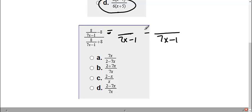Okay, and this first one already had the 7x minus 1, so I'm going to leave it. I don't have to do anything to the top. This one was missing it, so I need to multiply that by 7x minus 1. So 8 times 7x is 56x. 8 times negative 1 is negative 8.